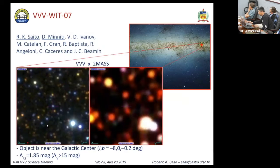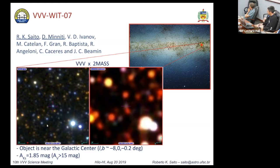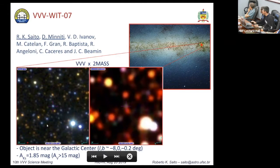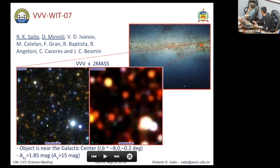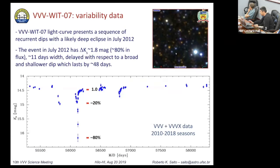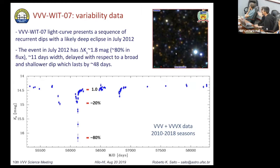The other object I'd like to talk about is VVV WIT 07. This is an object in the galactic bulge. You can see here the position of the object and the comparison between VVV and previous 2MASS data — there's a good improvement in resolution. You can see the object: it's a very blue object behind the galactic bulge. All the other VVV WIT objects are high-amplitude variables — very bright and then becoming quiescent. This one seems to be an eclipsing object, similar to what was shown earlier this morning.